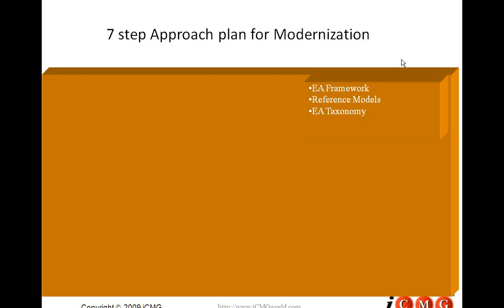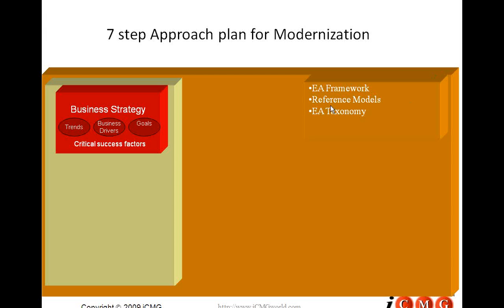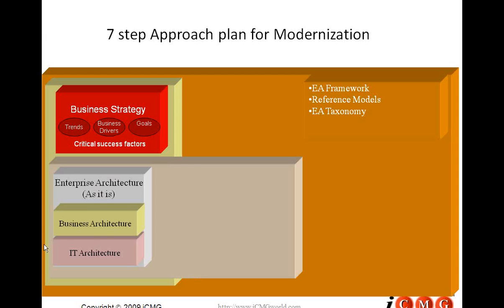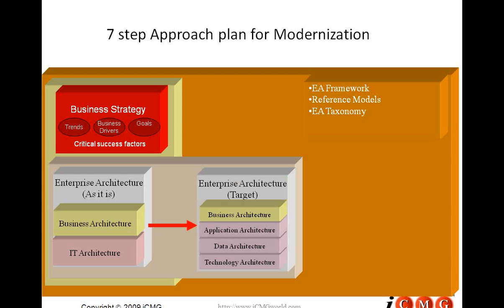The first step is to look at the selection of the framework — using reference models, taxonomy, and so on. Then use this framework to express, explain, document, and specify the business strategy, business drivers, and critical success factors. Next, identify how your current architecture is and its readiness to meet the goals. Then define your target architecture — business, application, data, and technology — and see how it can actually meet your business drivers and critical success factors.